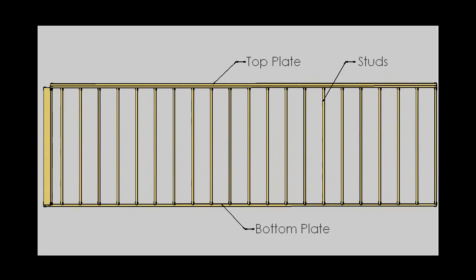Understanding the fundamental difference of these two wall types, let's go back and look at their anatomy. Regardless of the wall type, all walls will consist of three basic elements: a bottom plate, a top plate, and studs. In a non-load-bearing wall, the framing members would traditionally be 2x4s or smaller, and in a load-bearing wall, those framing members would be at least 2x4s, and oftentimes even larger.